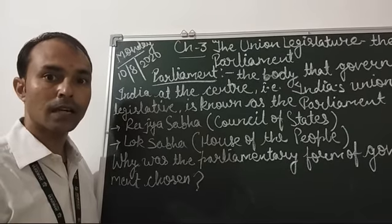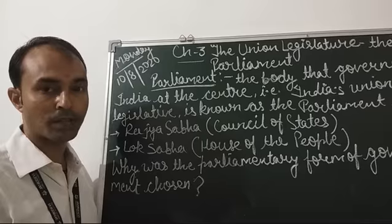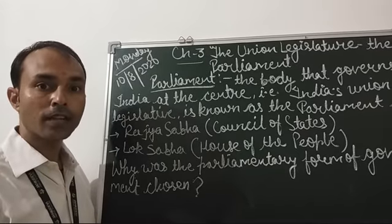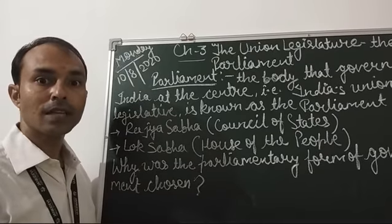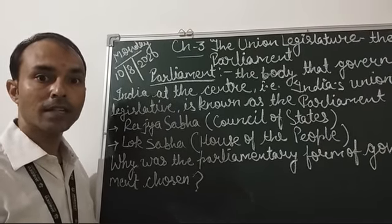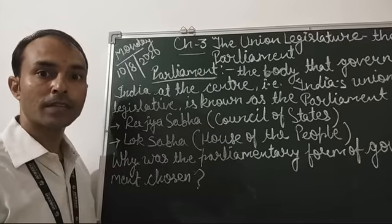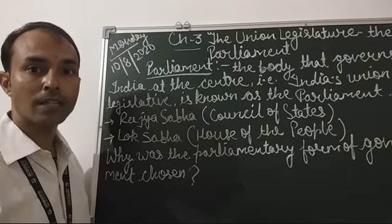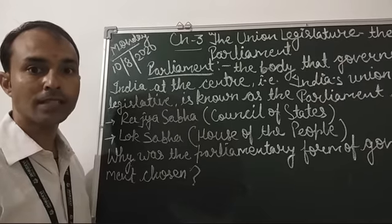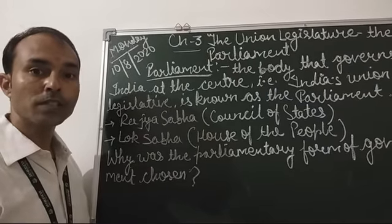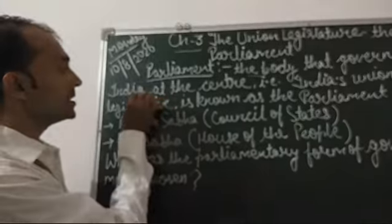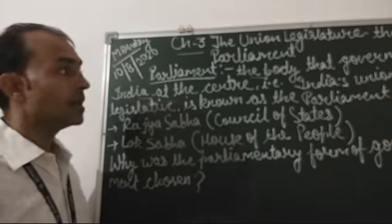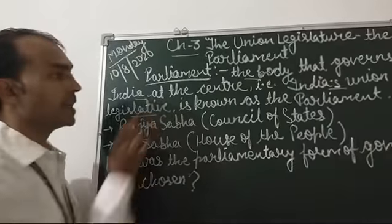Students, you need to connect the outcomes of the last chapter with this chapter. In a federal structure, we saw that India is a federal republic because the government works at different levels — at the center level, that is the union government, and at the state level, that is the state government. The body that governs India at the center is India's union legislature, which is known as Parliament.